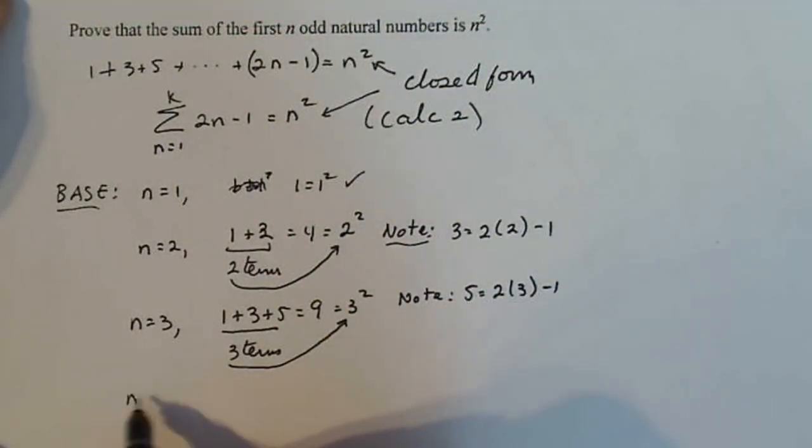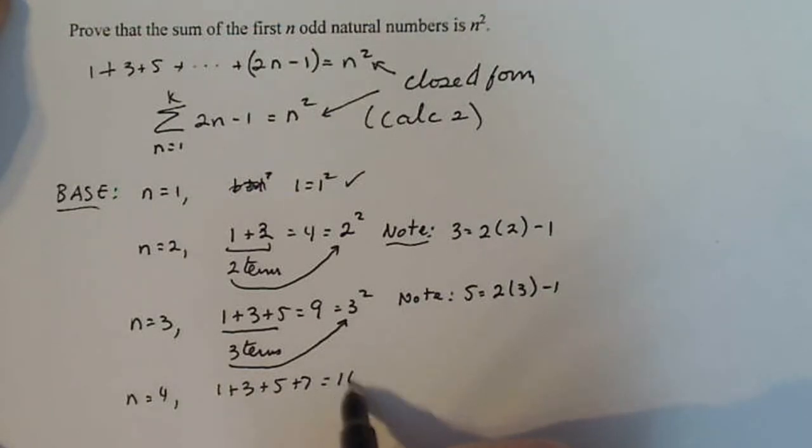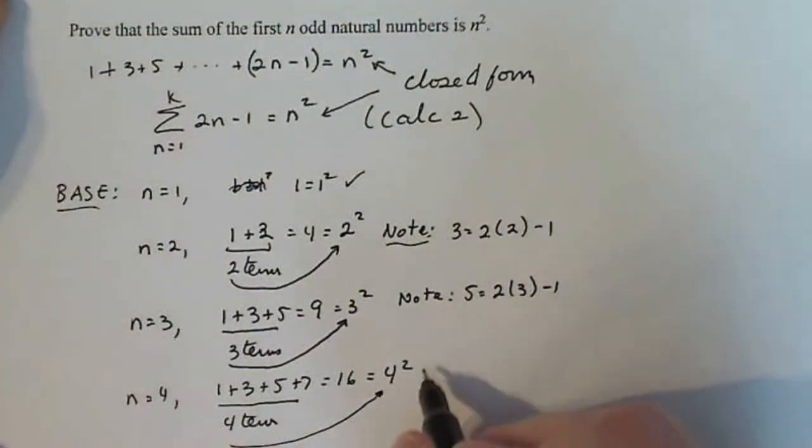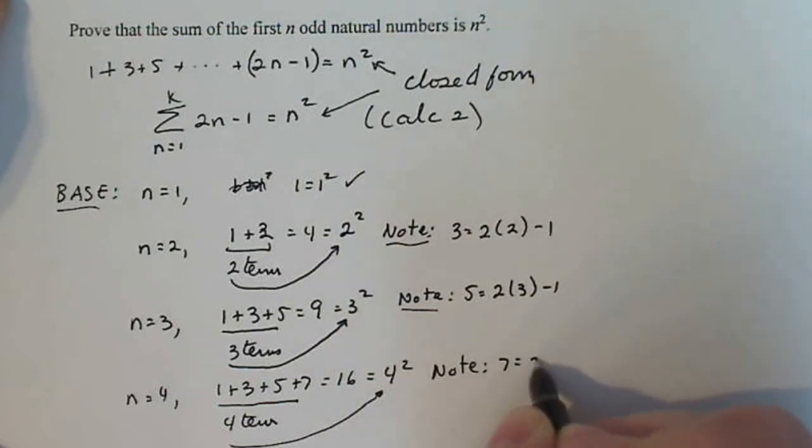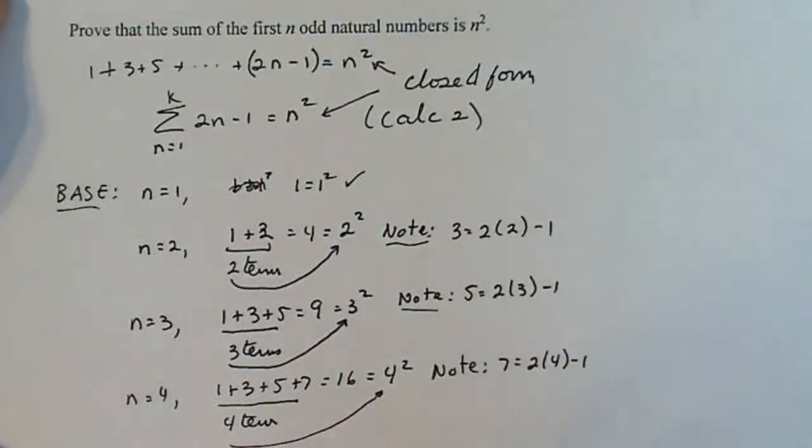So then I got n = 4. Let's just do one more. 1 + 3 + 5 + 7. That gives me 16. There are four terms here. So that should be 4 squared, which it is. And please note that 7 is 2 times 4 minus 1.